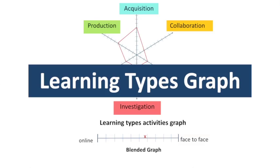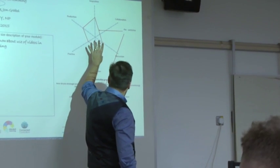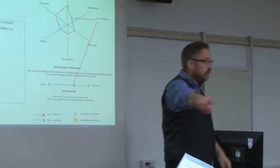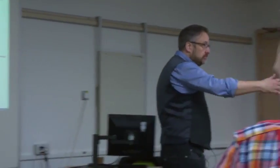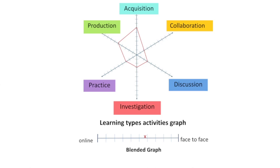The next stage helps you visualise the variety of learning types. Draw a rough idea of how you think the shape of the module is going to be in terms of activity types and a blend. Pick up the cards and look at both sides of them to understand what these things mean. You have five minutes for this.